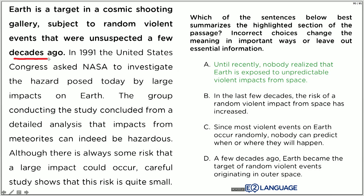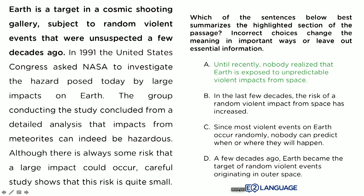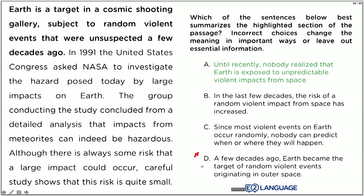I know option D says 'a few decades ago,' but option A says 'until recently' — that matches 'unsuspected.' 'Until recently, nobody realized' captures that it was unsuspected, and 'Earth is exposed to unpredictable violent impacts from space' matches 'a cosmic shooting gallery subject to violent events.' So A says the same thing as the original, but in different words. Options B, C, and D say something different or leave out critical information. D changes the meaning — it implies the events only started a few decades ago, but actually it's always been happening; it was just unsuspected until a few decades ago.